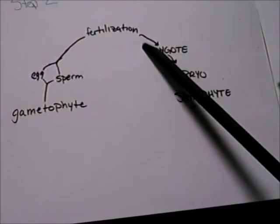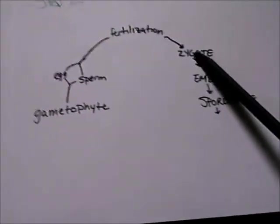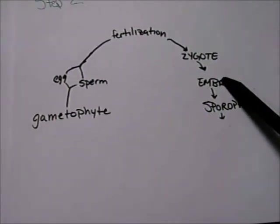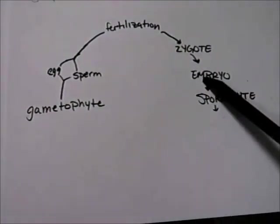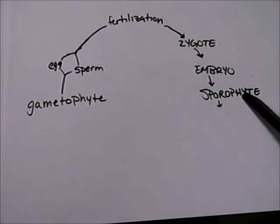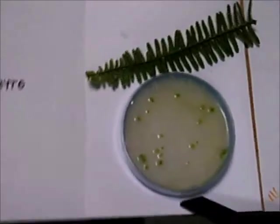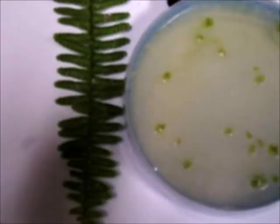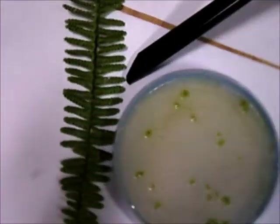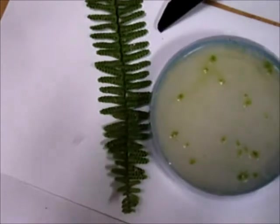After fertilization, it then becomes a zygote, and through mitosis and development forms an embryo, which through mitosis and development becomes a sporophyte. Here we have a beginning embryo and early sporophyte, which will then develop into a full grown sporophyte.